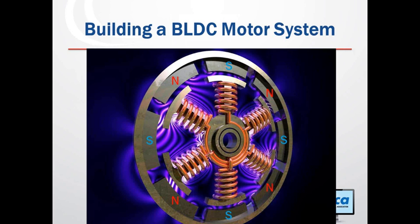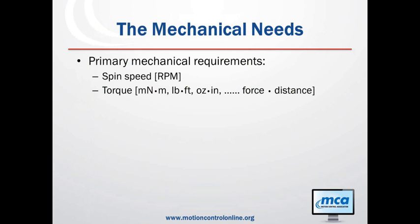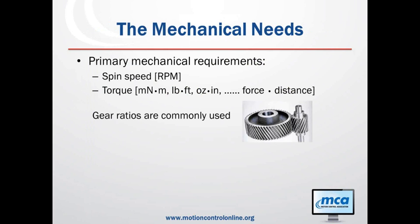At the highest level, what you need the motor to do is spin at some RPM and push with some torque — those are the two fundamental mechanical needs, whether you're making an electric drill, a fan, or a valve. Gear ratios are extremely common and directly trade off RPM for torque: a 10-to-1 gear ratio means the big gear turns 10 times slower with 10 times the torque, with a small loss due to friction.